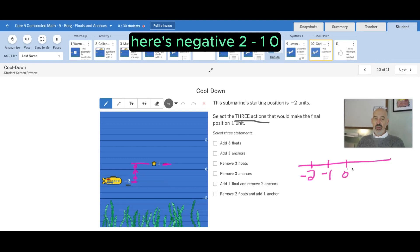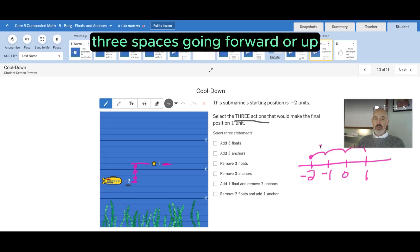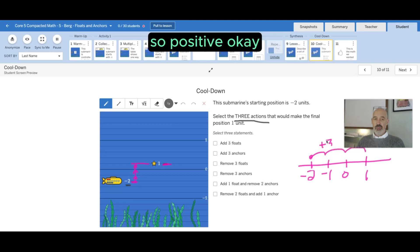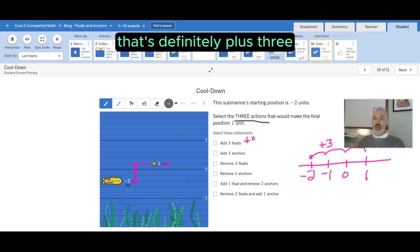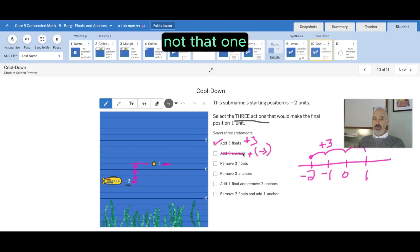Okay, so horizontally on a number line, which you've been working on, here's negative two, negative one, zero, positive one. That's also a change of three spaces going forward or up, so positive. Okay, so let's look. Adding three floats, that's easy, that's definitely plus three. Floats are positive, this is one answer. Adding three anchors, that's actually still adding, but it's adding three negatives. It's going to definitely drop, not that one.